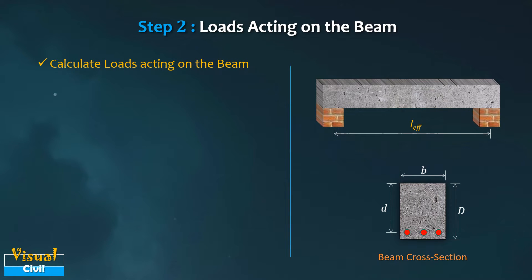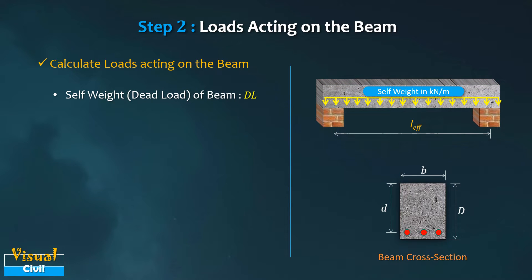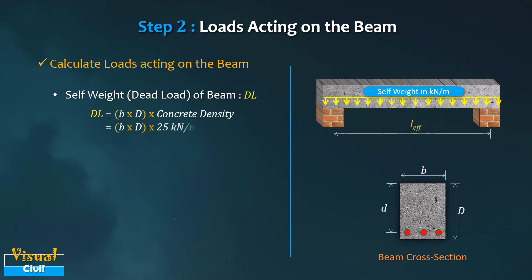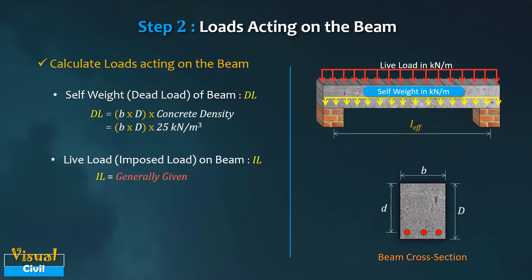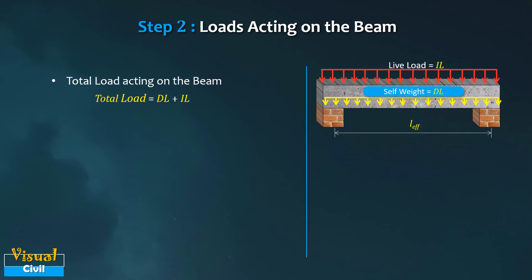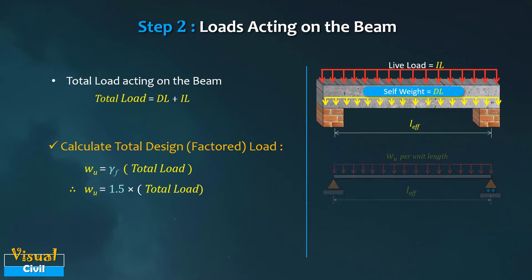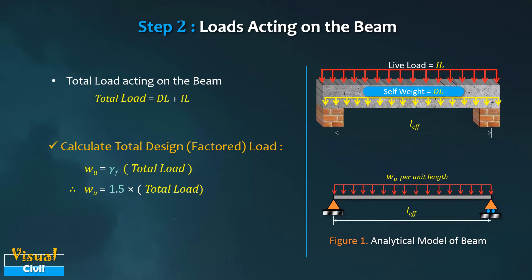In Step 2, calculate the loads acting on the beam. First, calculate the self-weight or dead load of the beam in kN/m by multiplying the cross-sectional area of the beam with concrete density — consider concrete density as 25 kN/m³ per IS 456 clause 19.2.1. Live load or imposed load is generally given in the problem. Calculate total load by adding dead load and imposed load, then multiply by partial safety factor γf from Table 18. For dead load plus imposed load combination, γf equals 1.5.